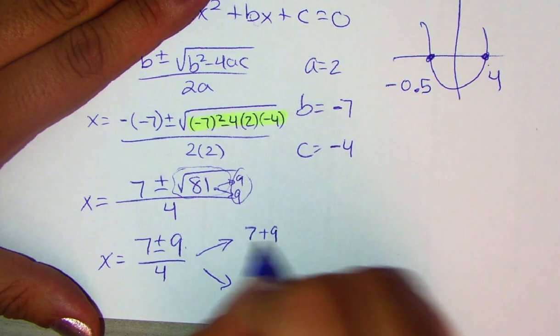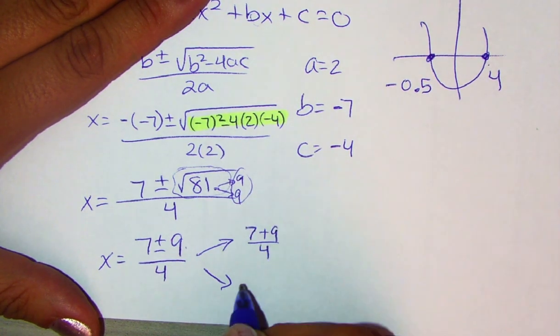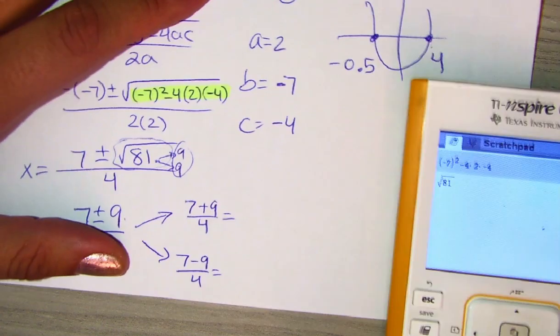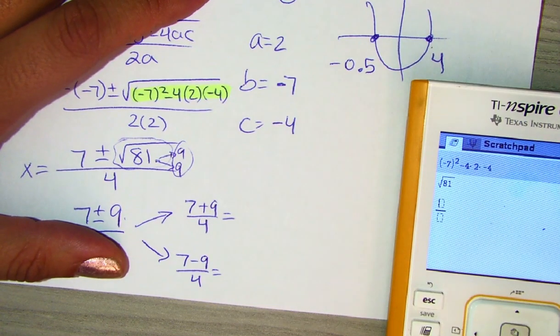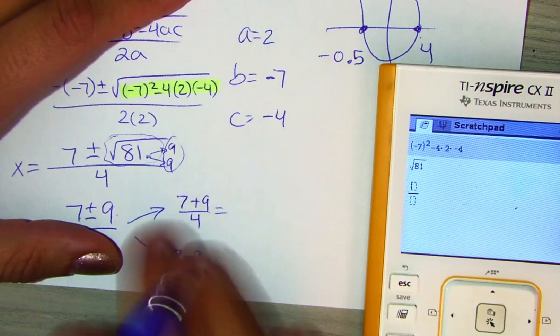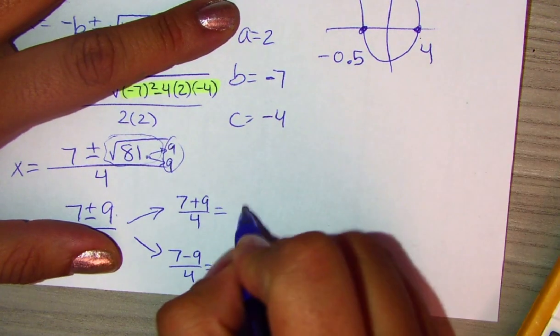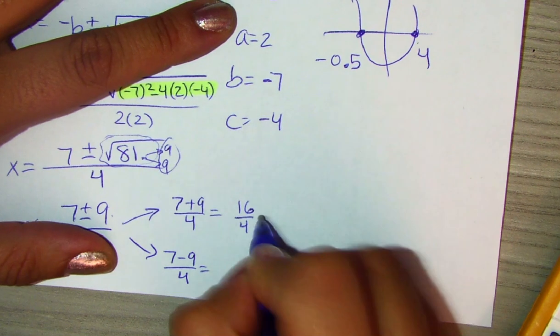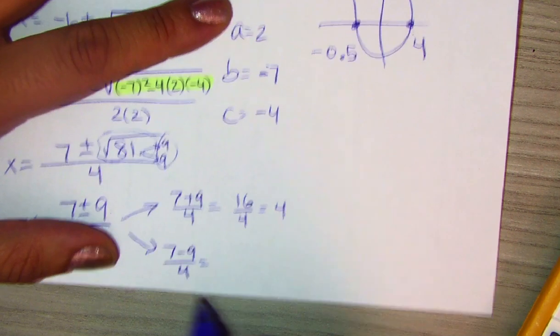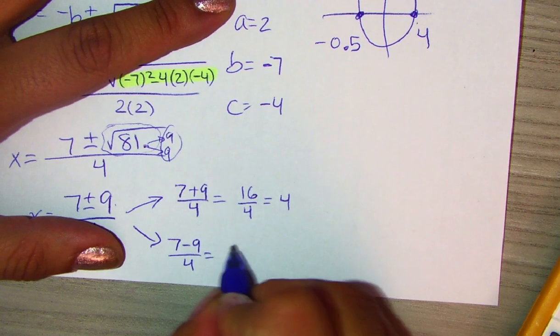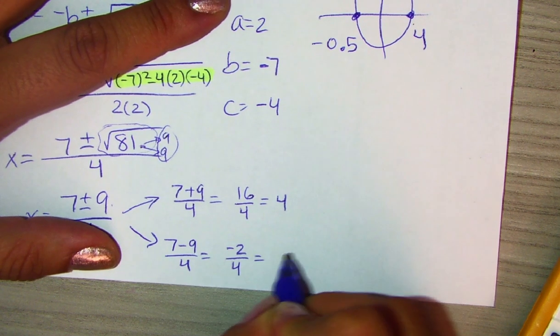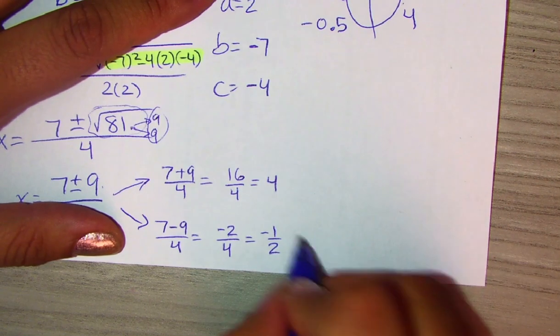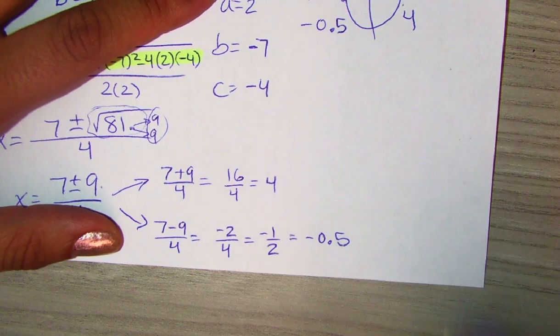We're going to have 7 plus 9 divided by 4 and 7 minus 9 divided by 4. We could just type this in the calculator, or we could also do it by hand. It's up to you. 7 plus 9, that is going to be 16 divided by 4, and that gives you 4. 7 minus 9, that gives you negative 2 divided by 4, which gives you negative 1 half. And negative 1 half is negative 0.5 if you want to turn it into a decimal.